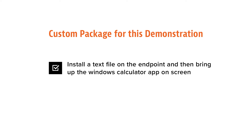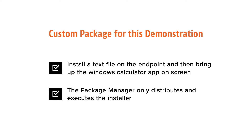For this demo, I have created a simple package that will install a text file on the endpoint and then bring up the Windows Calculator app on screen. We will be able to see where the text file is deployed to, which is dictated by my custom app as this controls what happens inside the installer. Remember that the Package Manager only distributes and executes the installer, so you will have to control any installer specifics yourself.